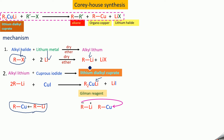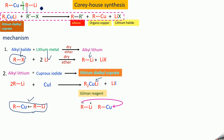You treat Gilman's reagent with a second alkyl halide. Writing the reagent as R-Cu and R-Li, when treated with R'X there is a break: R-Cu separates, then R (from R-Li) combines with R' to form R-R', giving you an alkane. Li combines with the halogen to form lithium halide (LiX).